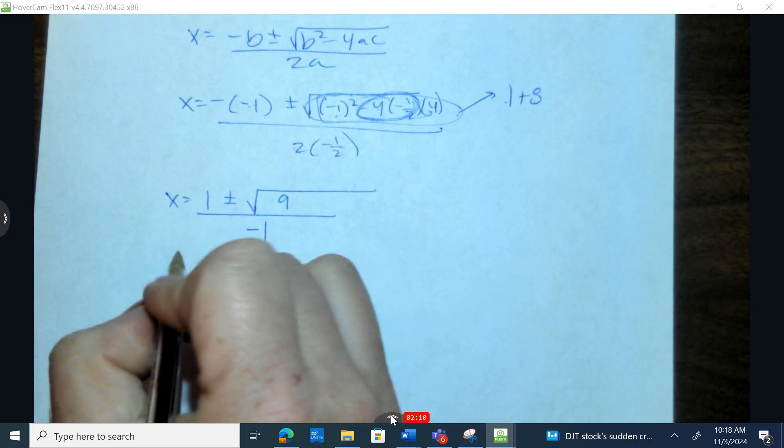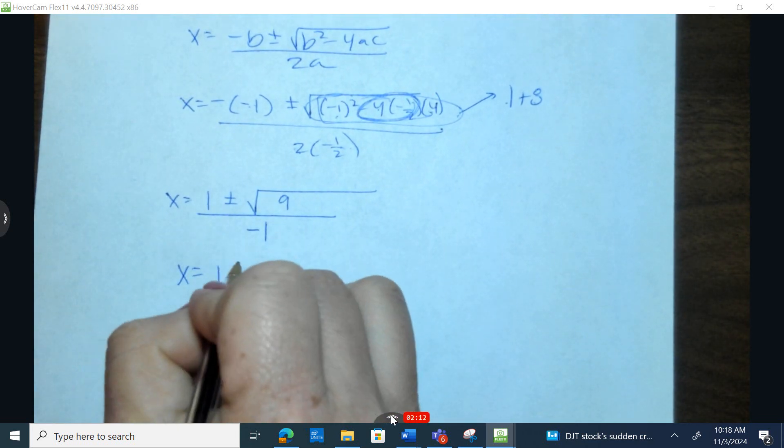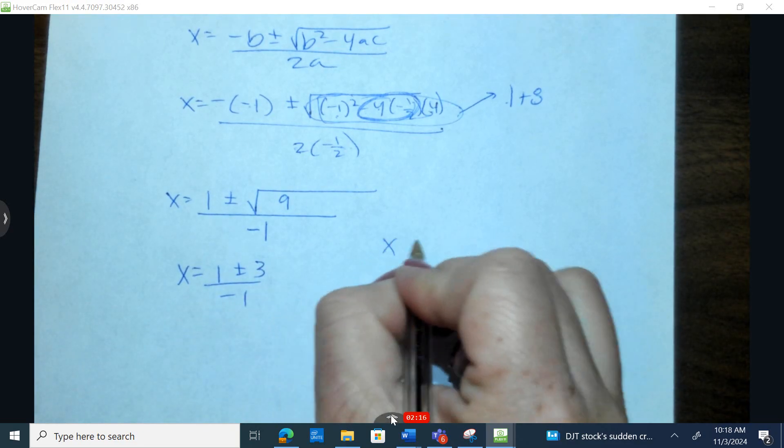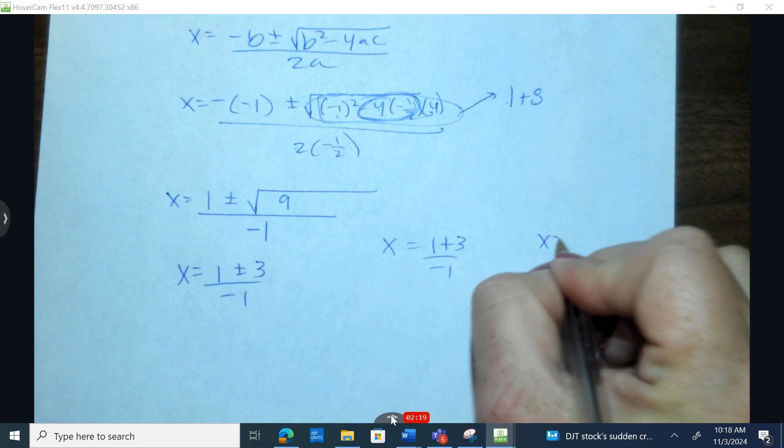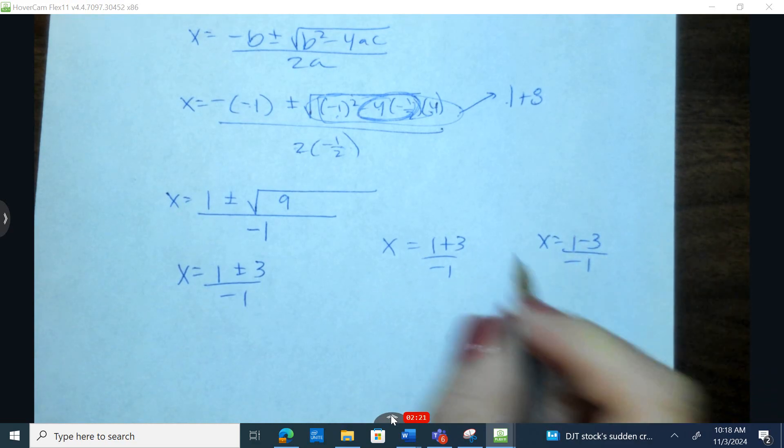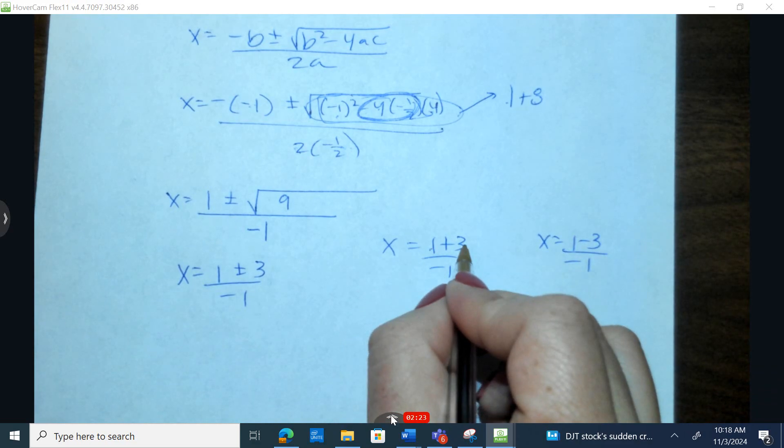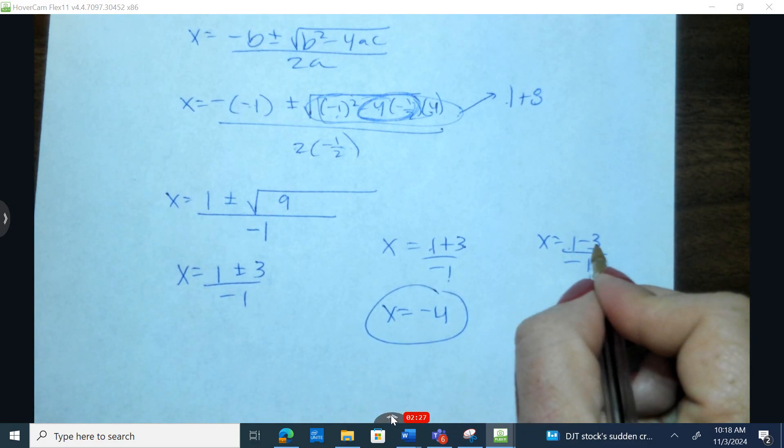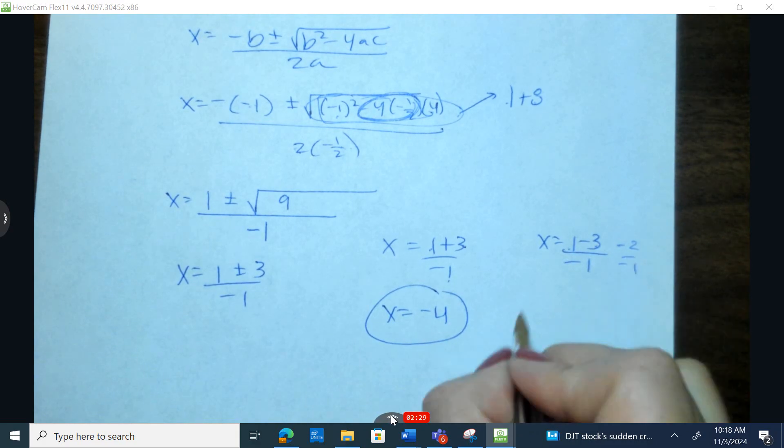Half of 2 is 1, and there's negative, so I have 1 plus or minus 3 over negative 1. Let's first add, so first I'm going to add and get an answer, and next I'm going to subtract and get an answer. 1 plus 3 is 4, 4 divided by negative 1 is negative 4. 1 minus 3 is negative 2, negative 2 divided by negative 1 is 2.